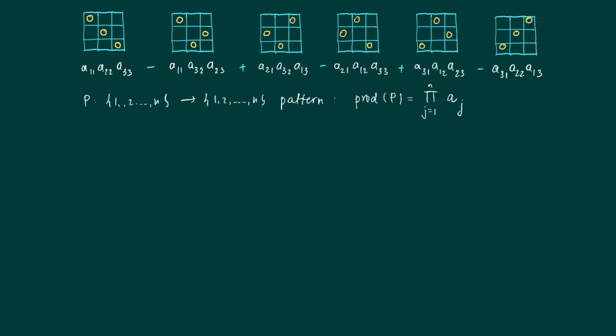j is one to n: a_j, P(j). So we just have, for instance, the product a11, a22, a33. Now the determinant of the matrix is no more, as we can see, the sum over all these kinds of patterns with a minus sign or a plus sign times the products of P.